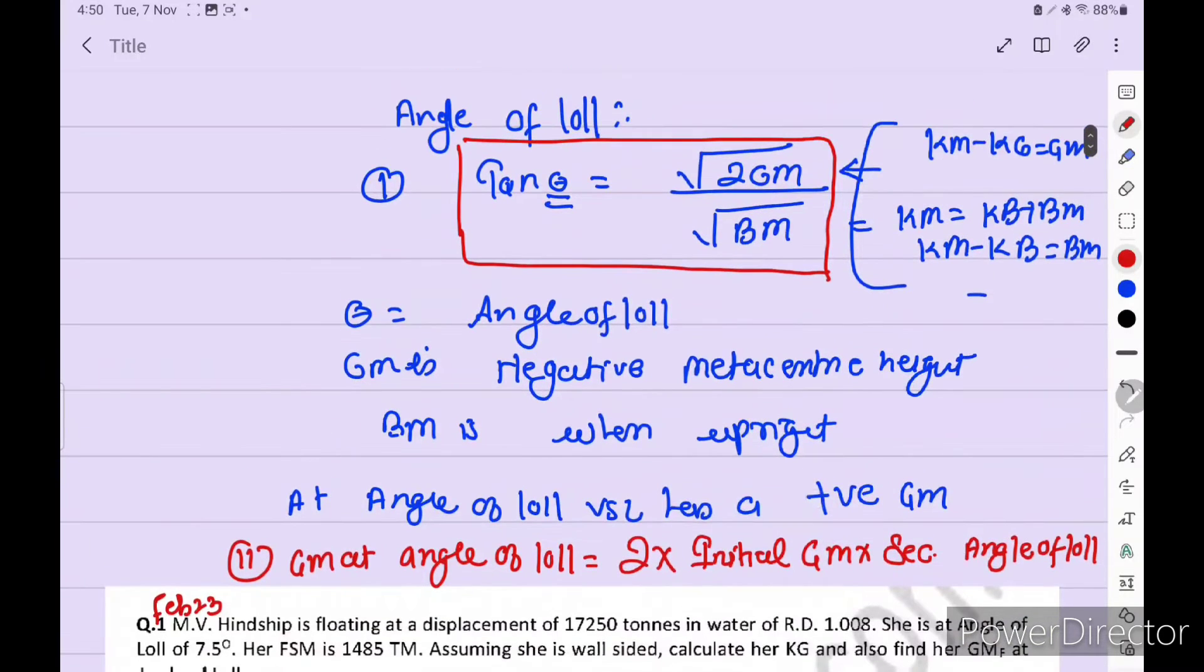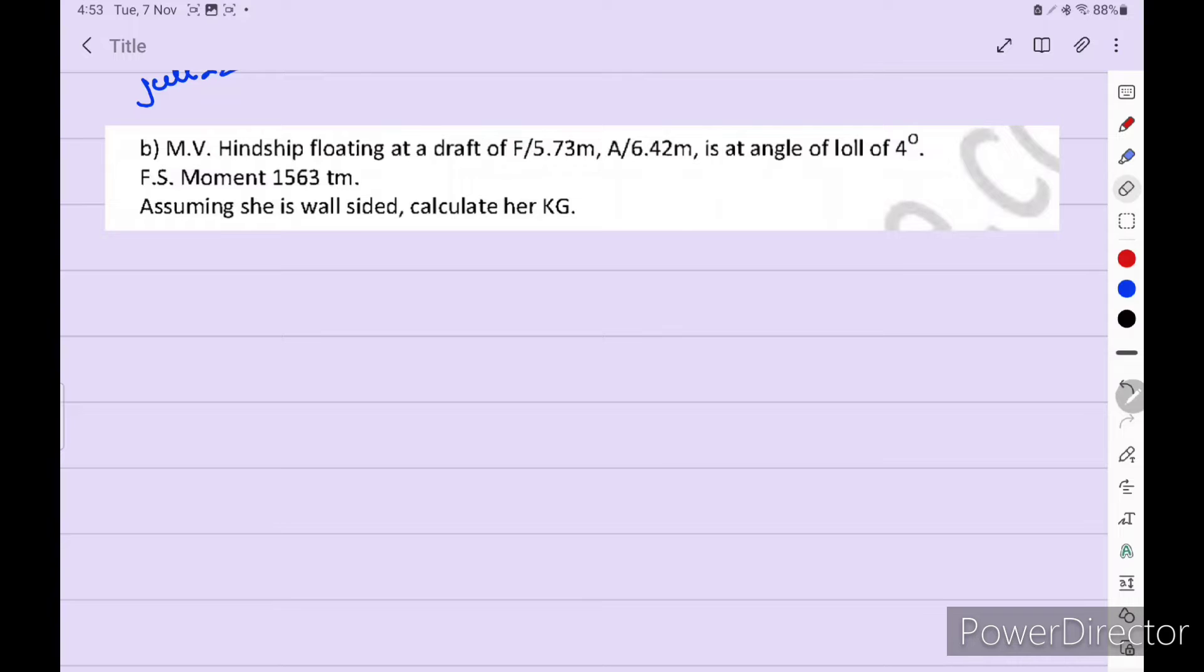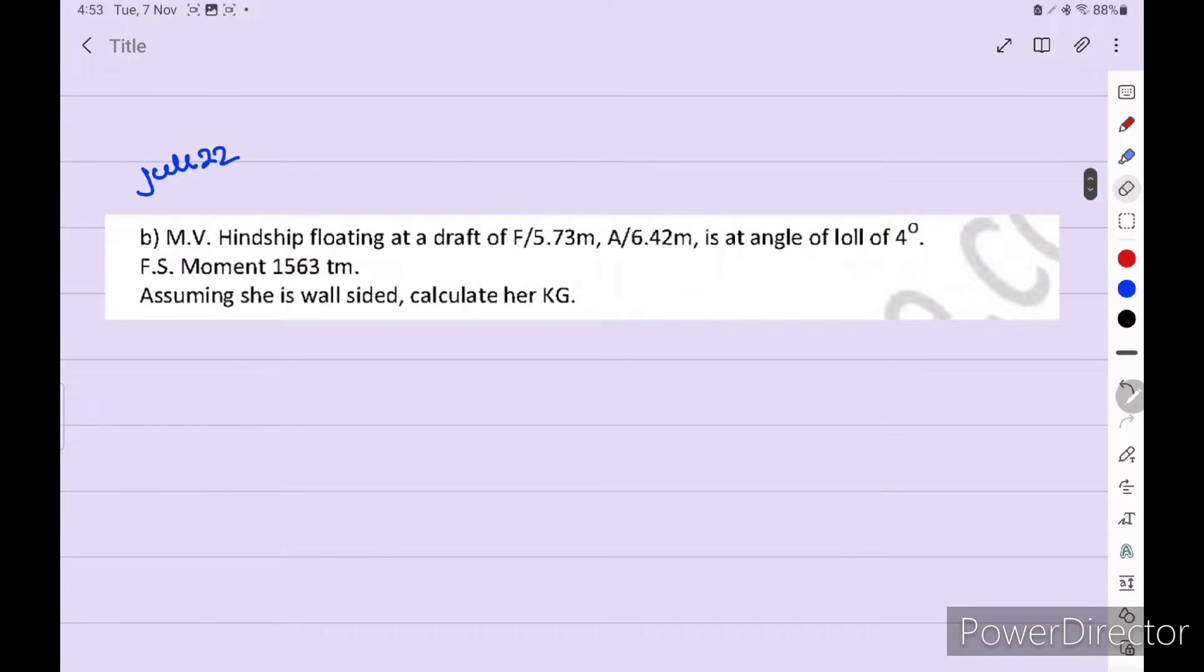GM at angle of loll is equal to 2 into initial GM into sec angle of loll. So for angle of loll type of numerical, we need to know this one. This formula and how this GM comes. KM minus KG is equal to GM.